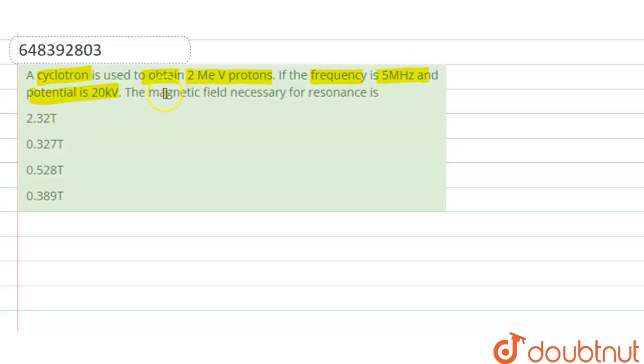So here we have given that we have obtained a proton with the help of the cyclotron, and the cyclotron produces proton with kinetic energy of 2 mega electron volt.